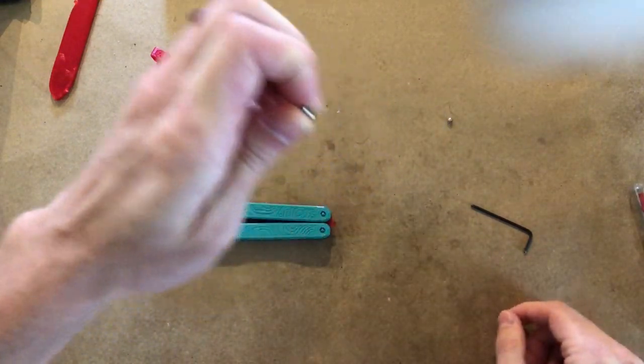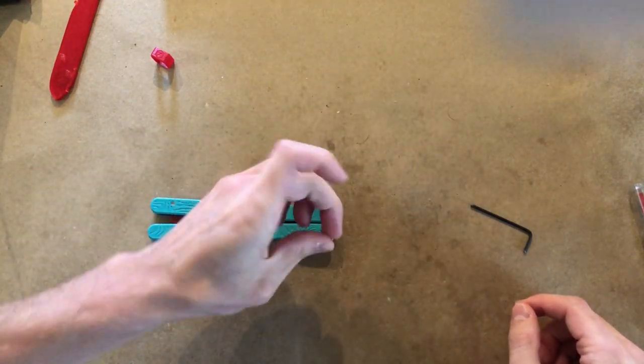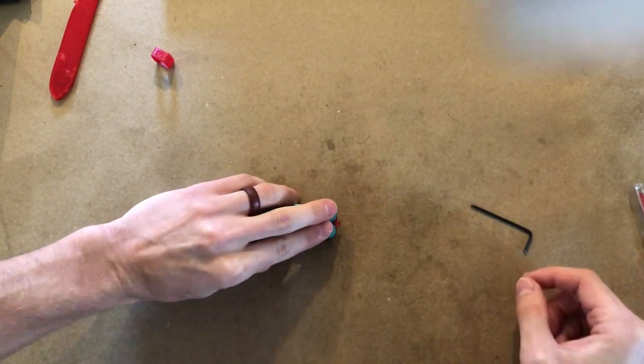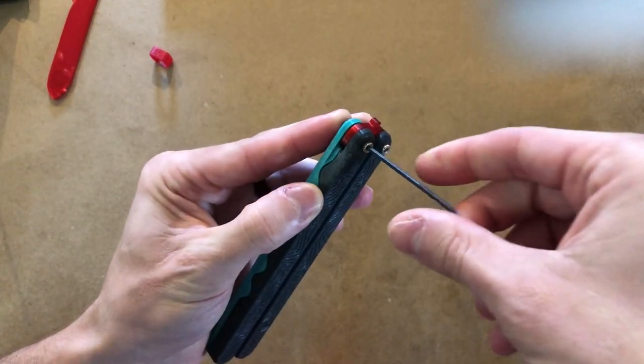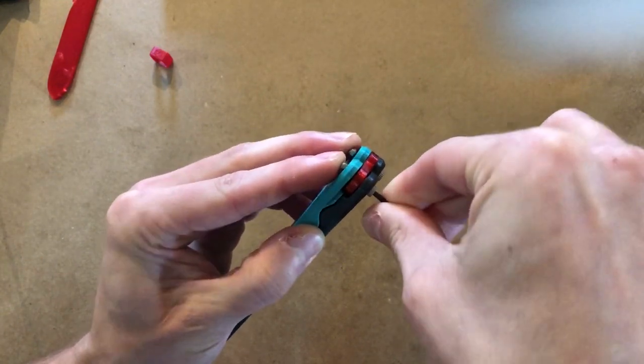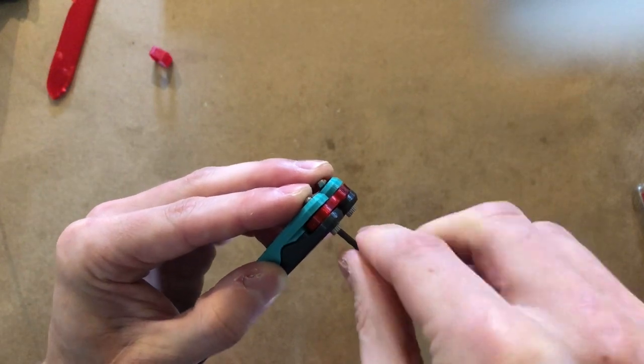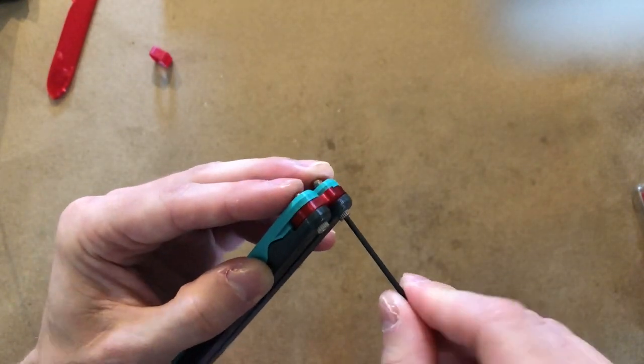At this point I'm going to take the two hex nuts and just place them on the screws. I'll gently push down and lift up the balisong and I'll screw them. I like to go lefty loosey first just to line up the threads. Lefty loosey, catch the threads, and then now I'll go righty tighty. It's just a loose fit. We'll tighten them later when we tune it.